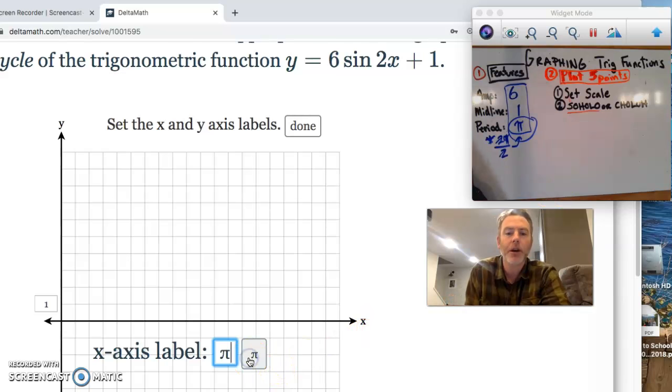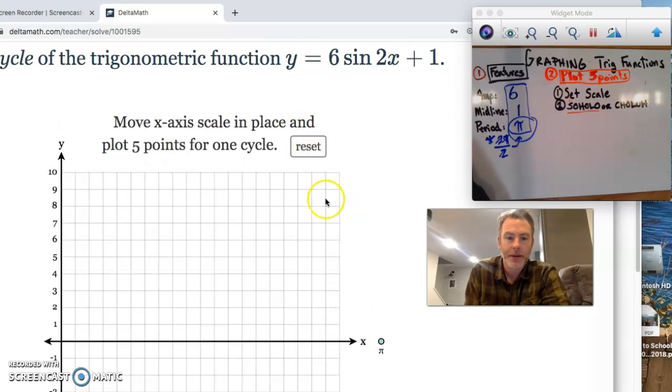Make sure we set that according to our period. Remember, what we want is 1 complete cycle. There we go. We're going to drag this period to our 5th point, starting with our 1st point at the origin. So 1, 2, 3, 4, and 5. There we go.